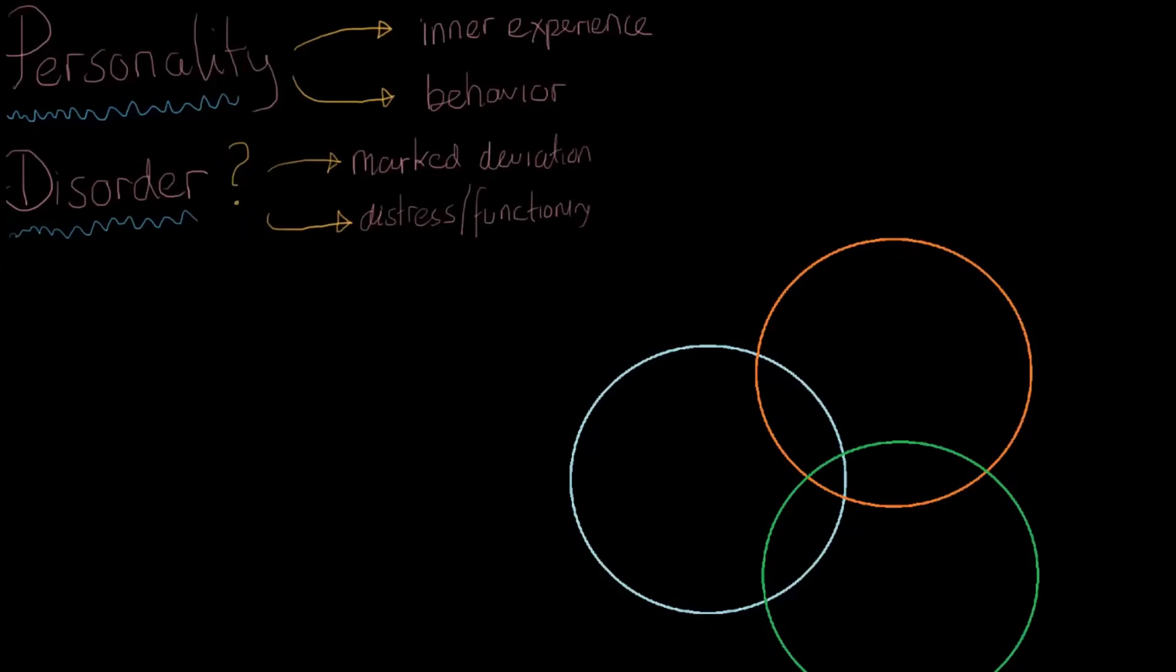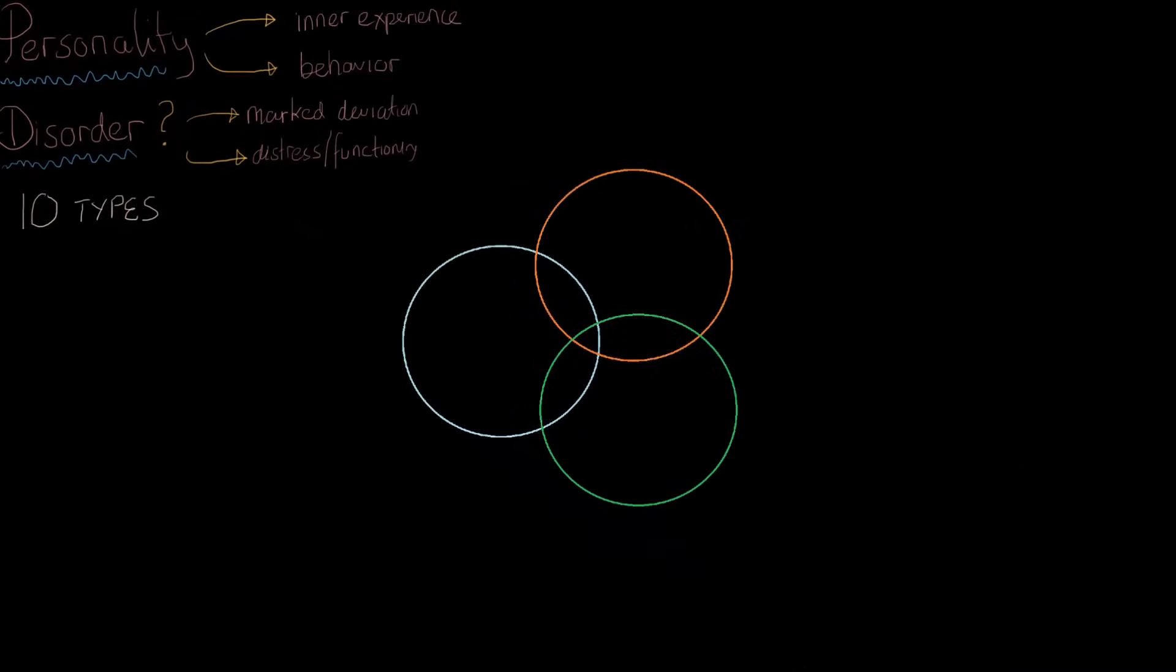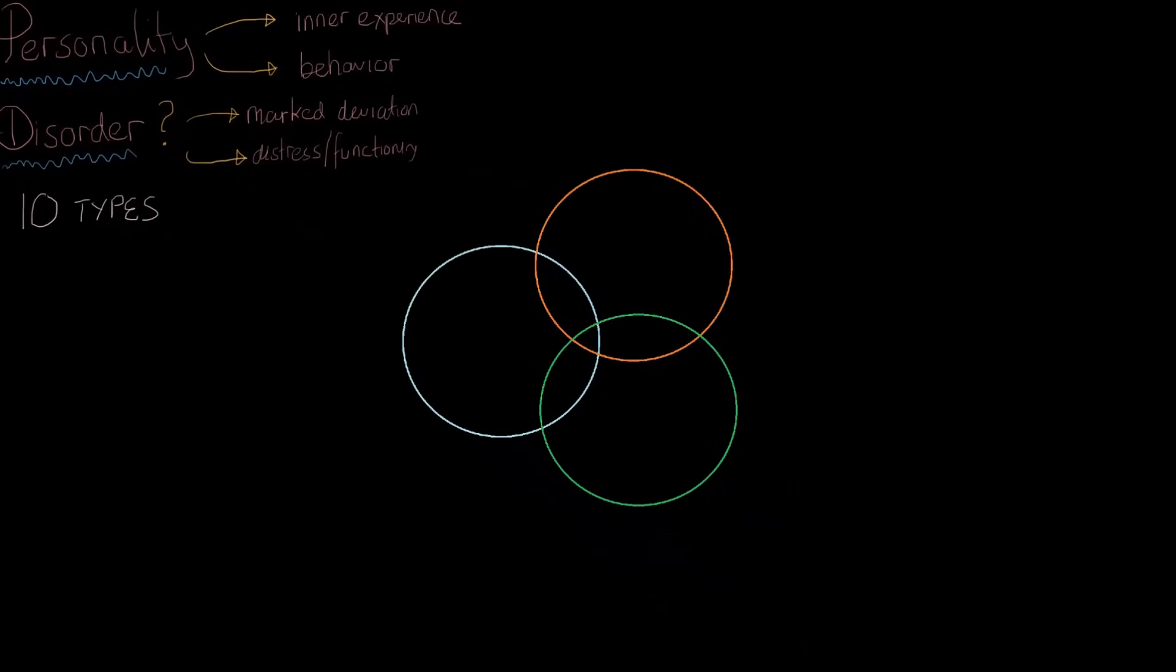One of the things that we know in the current categorization is there are 10 personality disorders, and they are separated out into three big clusters. As we can see, there are three circles: we have cluster A, cluster B, and cluster C.